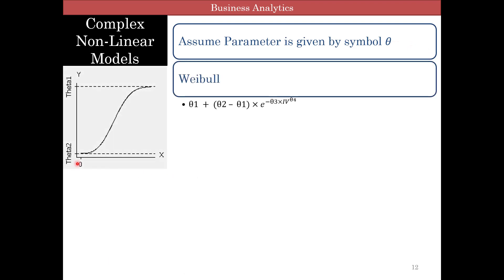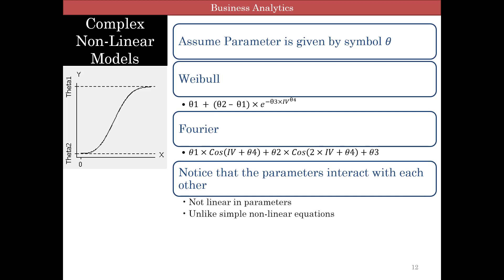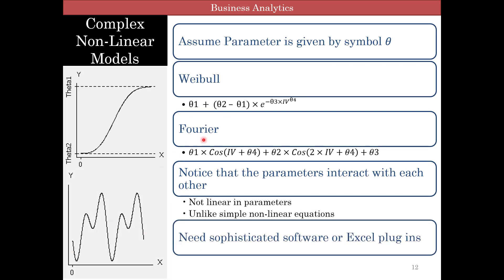Let's take an example. Assume parameters given by the symbol theta. There's the Weibull distribution, which looks like an S-shaped curve: theta_1 plus (theta_2 minus theta_1) multiplied by the negative exponential of theta_3, and the independent variable to the power — it looks complex. The parameters are multiplying with each other and appear in the exponent. And here's another example: the Fourier model, which has a messy set of parameters that interact with each other. You definitely need more sophisticated software for these models.